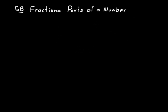Part B of this lesson is on fractional parts of a number. Let's think about a fractional part — like half of fifty. You know that half of fifty is twenty-five, and that one-half times fifty equals twenty-five. When dealing with fractional part of a number problems, think of the fraction as F, the 'of' part as times, and the result as 'is': F times of equals is.